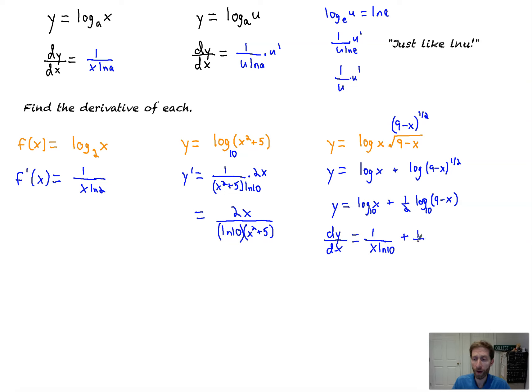Plus, we have 1 half times 1 over stuff. That's 1 over 9 minus x times the derivative of 9 minus x is negative 1 times, and that'll be ln 10. And we'll neaten this up a little bit. So it's 1 over x ln 10. And then we've got minus 1 over, I'll put the 2ln 10 out front, 2ln 10 times 9 minus x. And that's all.